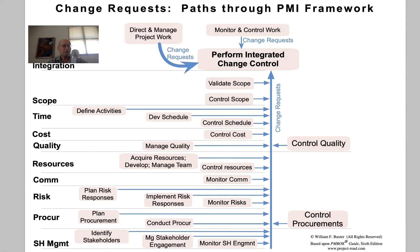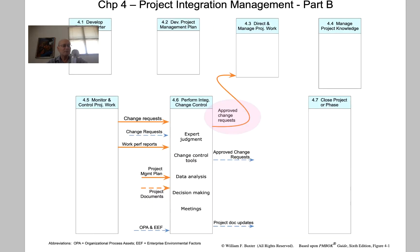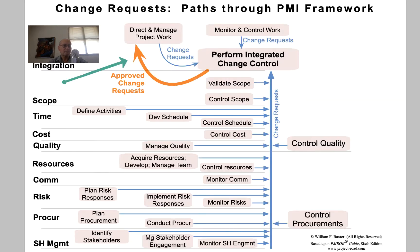We see change requests also coming from Direct and Manage Project Work in the execution process group. Approved change requests all need to go up to Direct and Manage Project Work — that's where we're doing all of the work of the project, so that's where we're going to implement these approved change requests. And that looks like this.